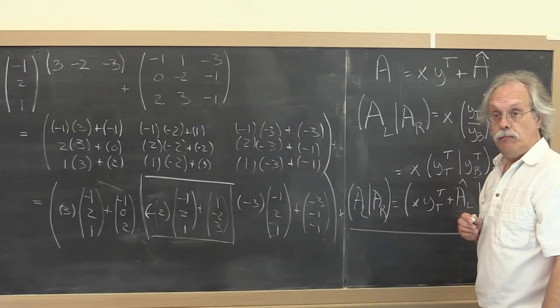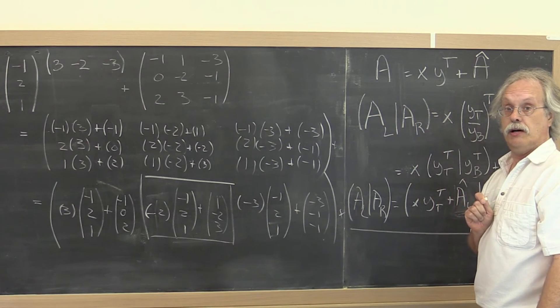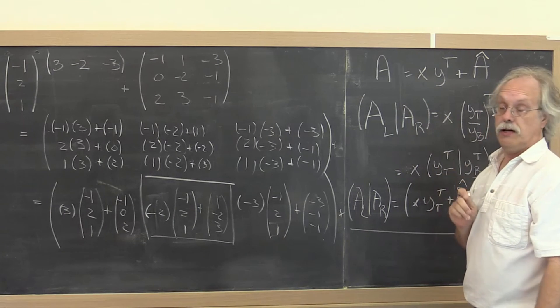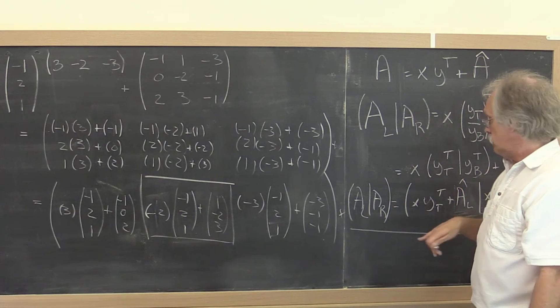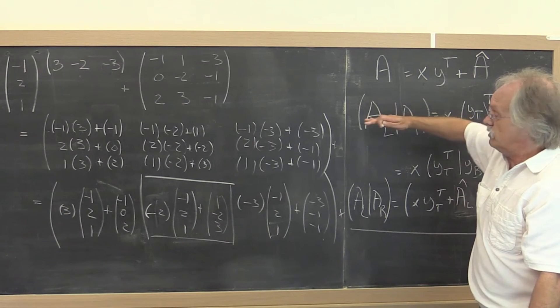But what did we learn from matrix vector multiplication? There we could partition the matrix by columns, or we could partition the matrix by rows. Here we've partitioned the matrix by columns. I wonder if there is a second partitioned matrix expression that comes from partitioning by rows.